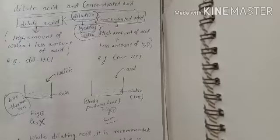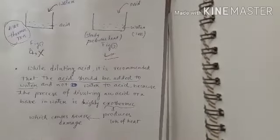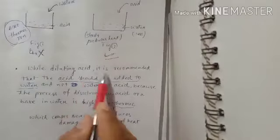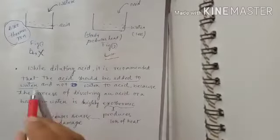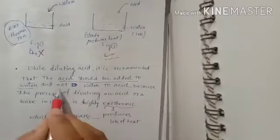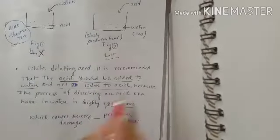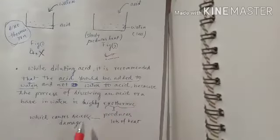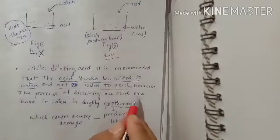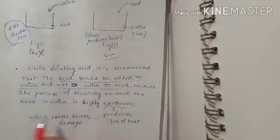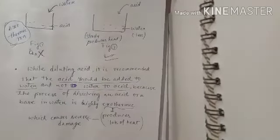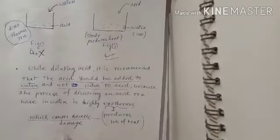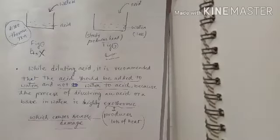So we can conclude: while diluting acid, it is recommended that the acid should be added to water, not water to acid. This is very important - not water to acid - because the process of dissolving an acid or a base in water is highly exothermic. It produces lots of heat, which causes severe damage.